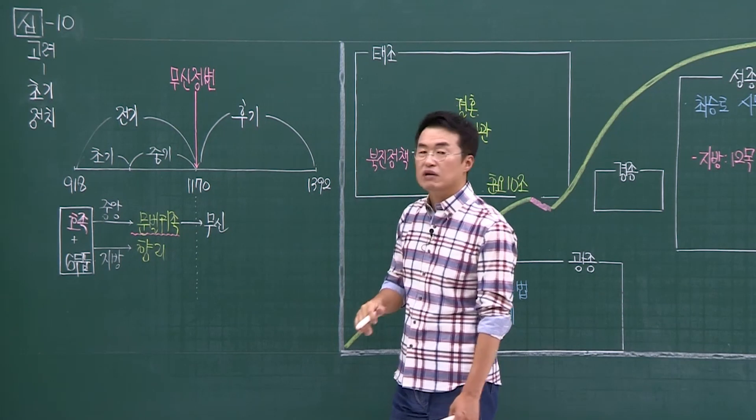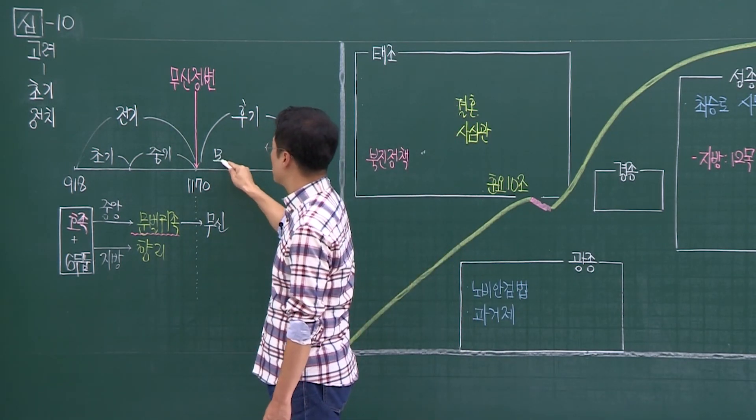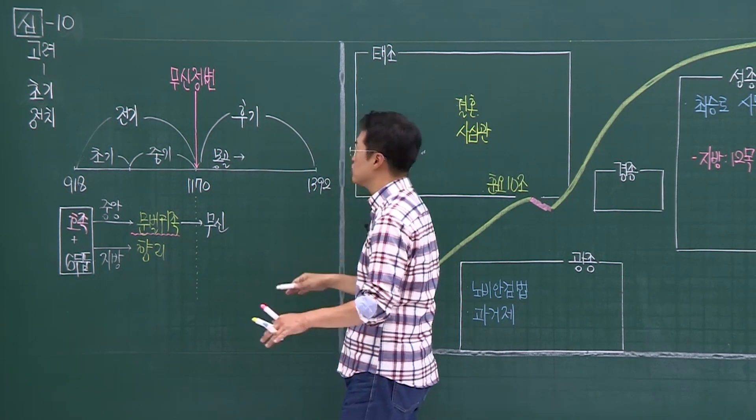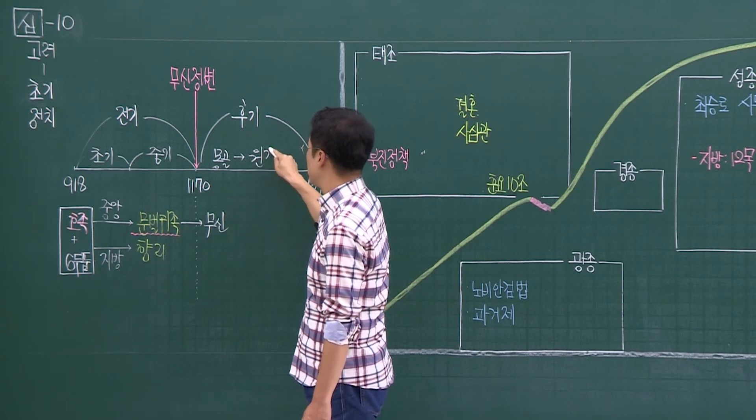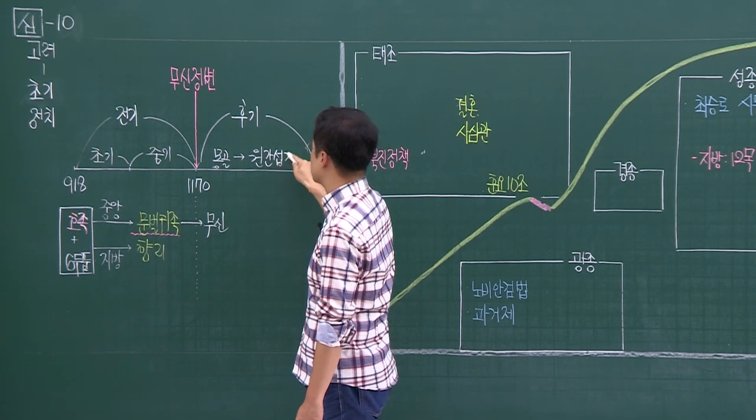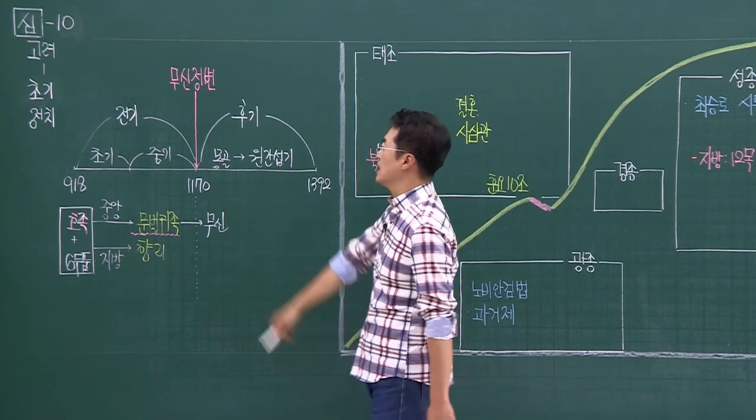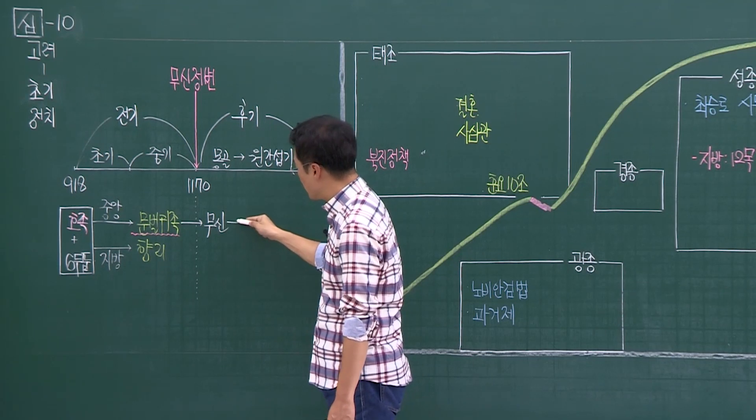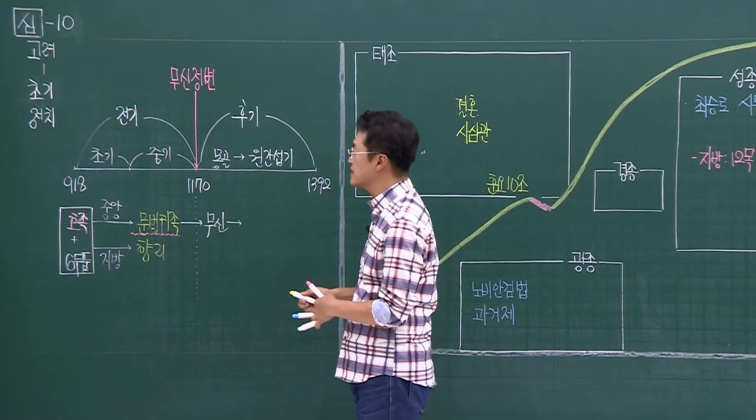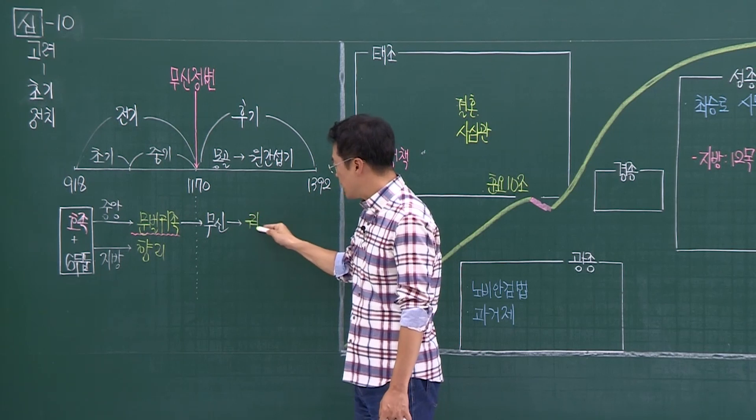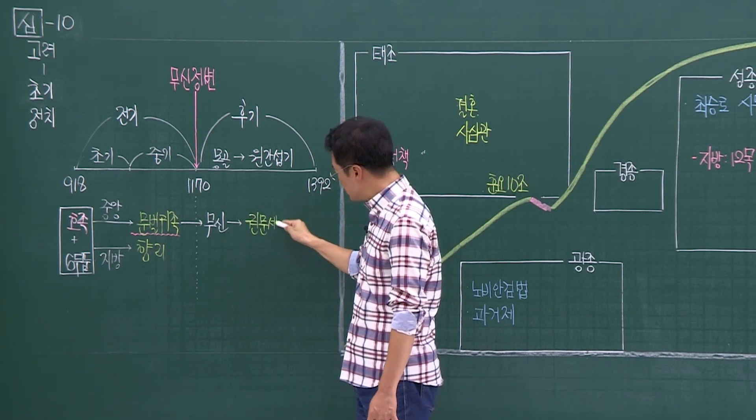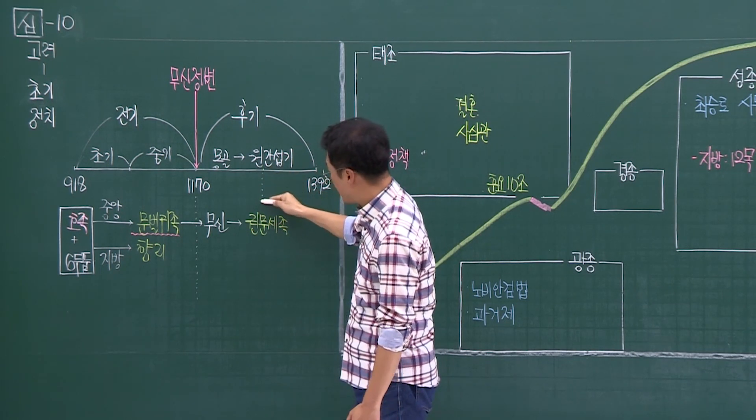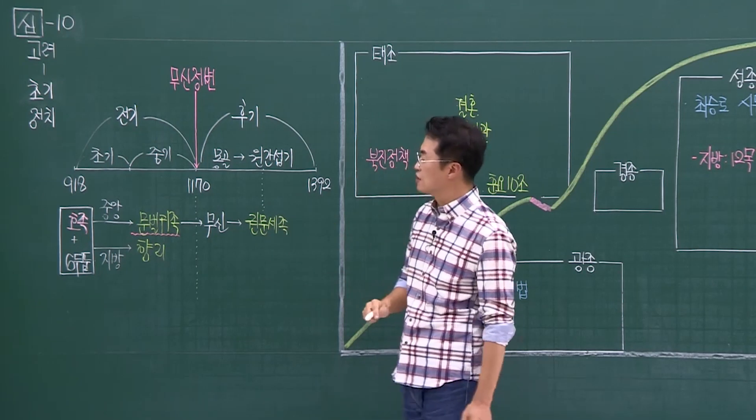그런데 이 무신이 집권하고 있을 때 누가 쳐들어오냐면 몽골이 쳐들어와요. 몽골. 몽골이 쳐들어오고 이후에는 결국 무신이 끝까지 항전하다가 결국 무너지게 되죠. 그러면서 이제 원간섭기로 들어옵니다. 몽골이 세운 나라 원. 원의 그 간섭을 받는 원간섭기. 이게 바로 이제 고려 후기였던 모습들이 되는데 이 원간섭기에 성장했던 세력이 있다고요. 원에 빌붙어서 성장했던 세력들이 있는데 그들을 뭐라고 하냐면 바로 권문세족이다라고 합니다. 그들을 바로 우리는 권문세족이다라고 이야기를 합니다. 그래서 이렇게 나오고 있는 모습들이 있는 것이죠.